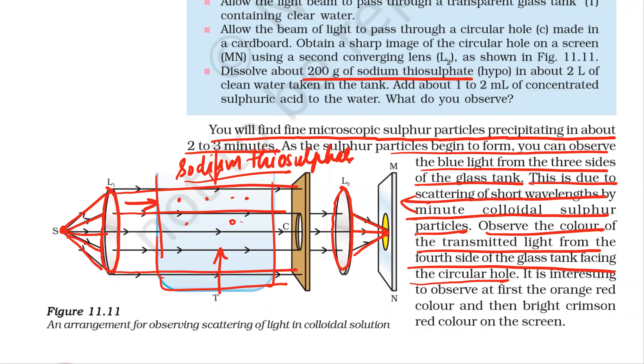Light is made to pass through the circular hole, through a lens, and the image is obtained on the screen. It is interesting to observe at first the orange-red color, and then the bright crimson red color is seen on the screen.